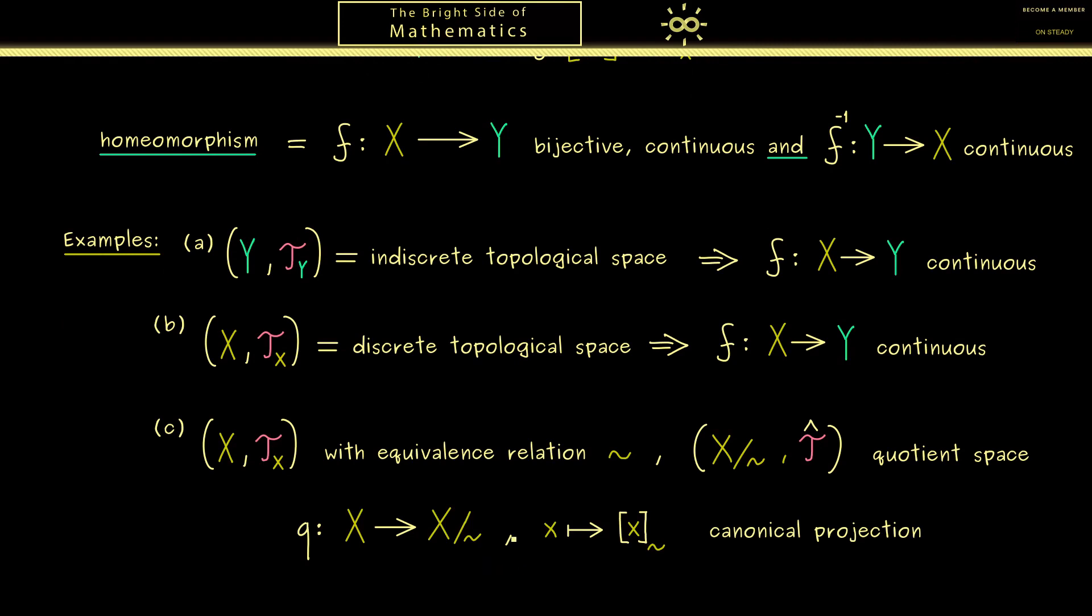Moreover we have found that we have the so-called canonical projection. Indeed this one we simply called q and it maps x to the equivalence class of x. And now by the definition of the quotient topology we know q is a continuous map. In other words, the quotient space is defined in such a way that the canonical projection is continuous.